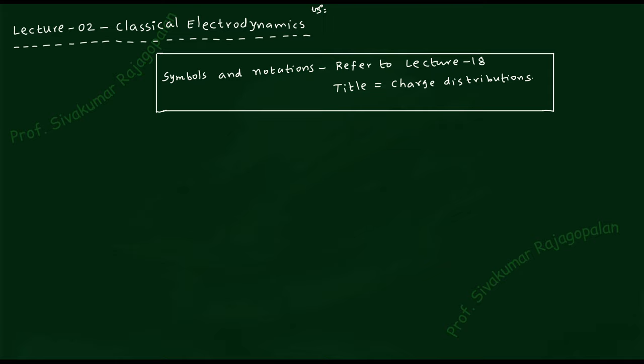Welcome students to the second lecture on classical electrodynamics at the MSc level. In the previous lecture I gave an outline of the course structure for the second course on electrodynamics. The first course on electromagnetism usually refers to what you studied in your undergraduate or BSc course — that is the terminology we are going to use.